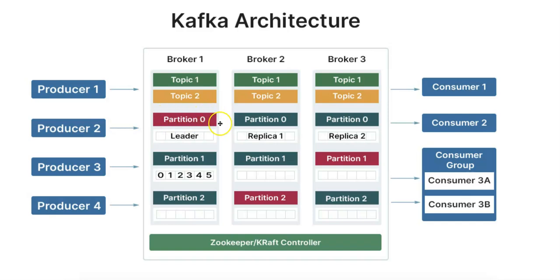Next, we have the partitions. You can see we have partition 0, partition 1, and partition 2 within this topic on broker 1. Topics are divided into partitions to allow for parallelism. Each partition is an ordered, immutable sequence of messages, and a partition is hosted on one or more brokers for replication and fault tolerance. The partitioning of topics enables Kafka to scale horizontally across multiple servers.